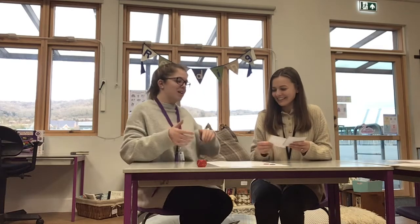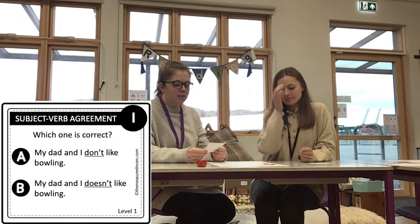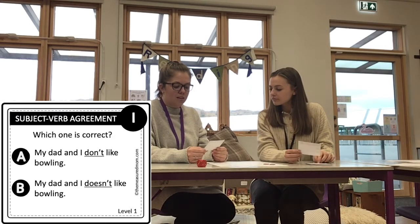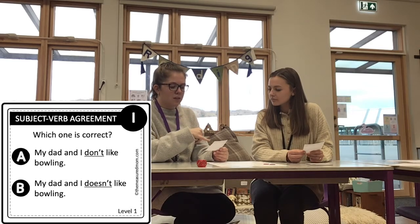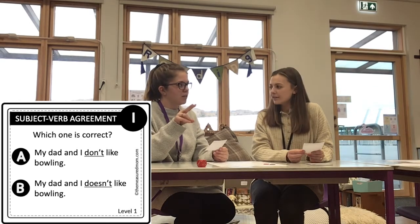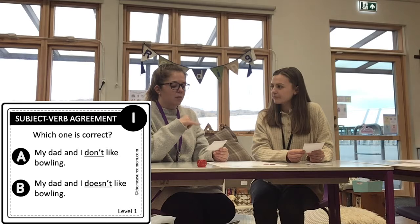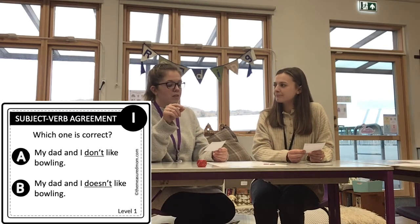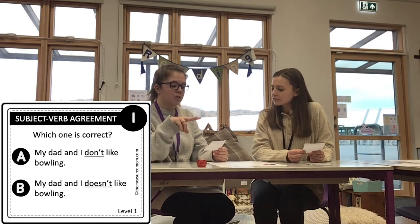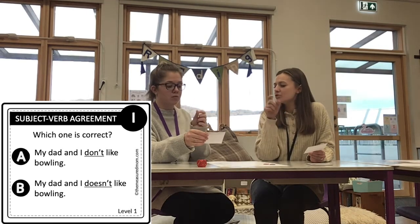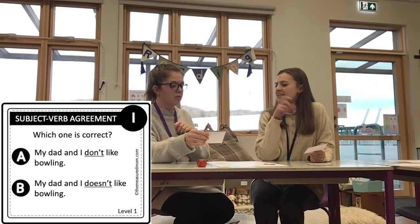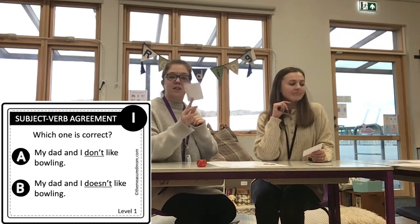Card number one says: 'My dad and I don't like bowling' or 'My dad and I doesn't like bowling.' You've got to think about the noun in the sentence — it's 'my dad and I,' so there are two nouns. Because there are two people, it's a plural noun, so it goes with 'don't.' You'd also think of it as 'do not' — 'my dad and I do not like bowling.' You wouldn't say 'does not.' The answer is A, so I'll keep that card.